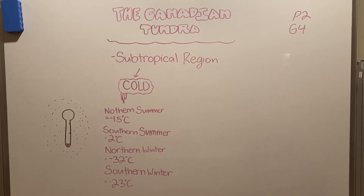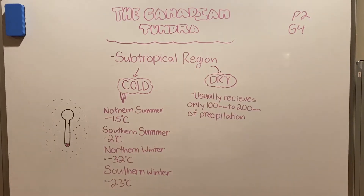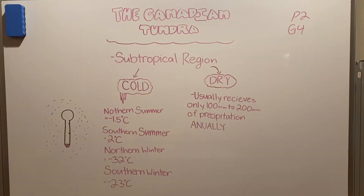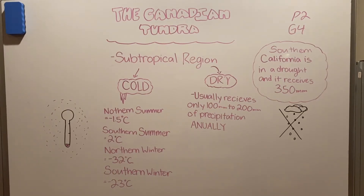However, not only are subpolar regions cold, they are also really dry, usually only receiving about 100 millimeters to 200 millimeters of precipitation annually. To put that value in perspective, we are in a drought and we are currently receiving 350 millimeters of precipitation annually.